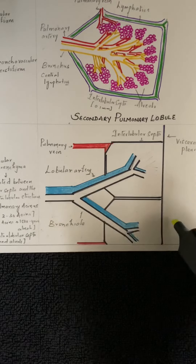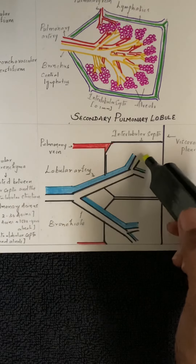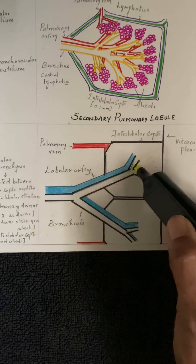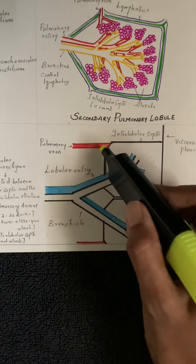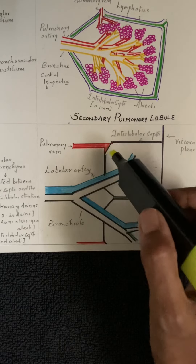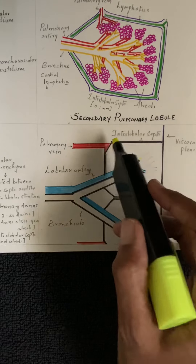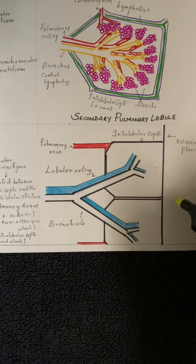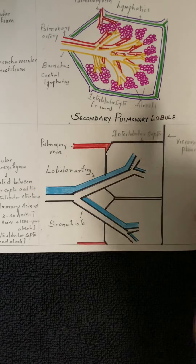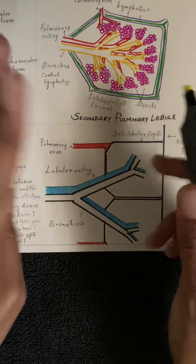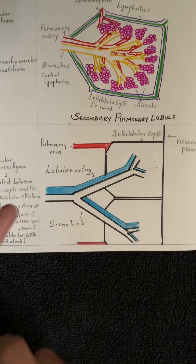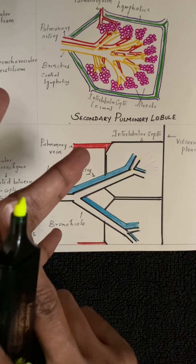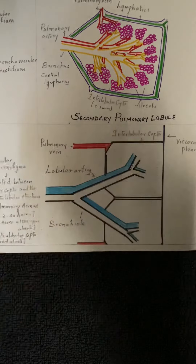As a basic concept: in each secondary pulmonary lobule, the centrilobular structures contain a lobular artery and a bronchiole, while in the periphery we have a pulmonary vein and lymphatics forming the interlobular septa, with visceral pleura at the outermost boundary. There are three micronodular patterns: centrilobular, perilymphatic, and random.